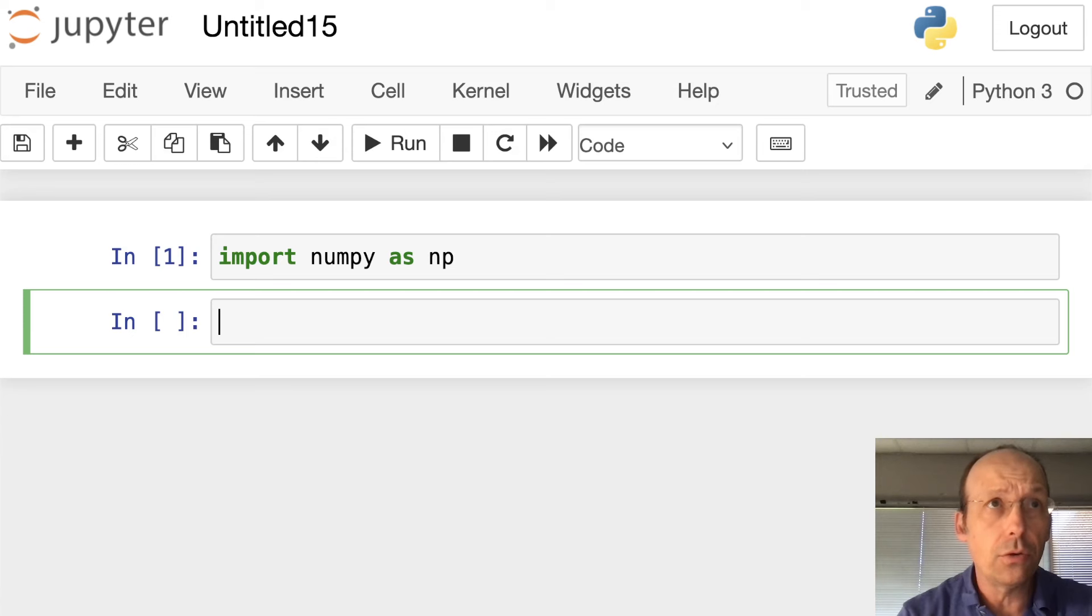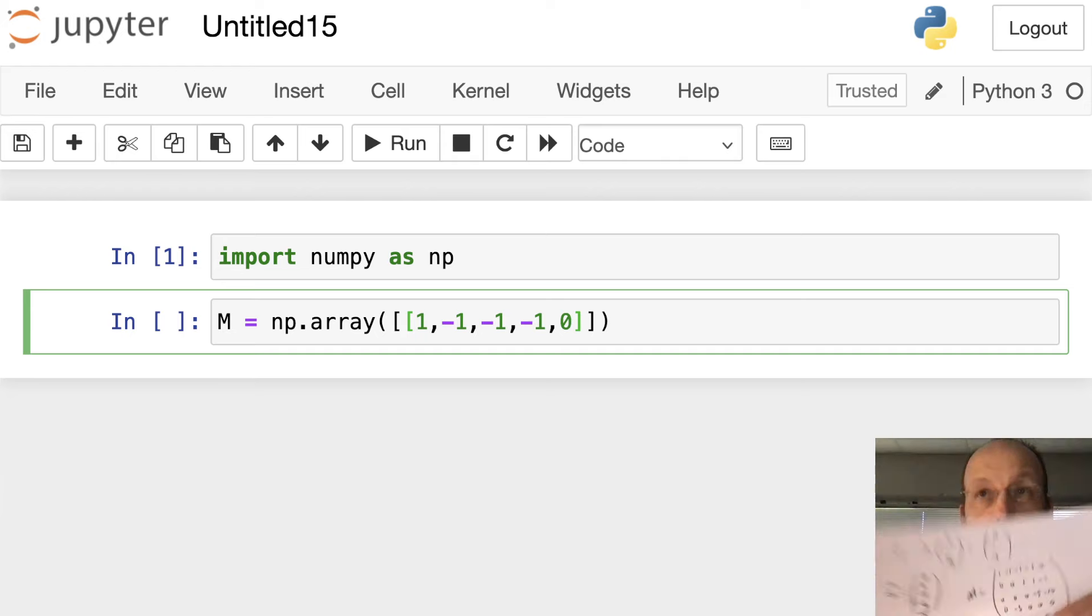Now the next thing we're going to do is to create our M matrix. So how do you create a matrix in Python? It's really just an array of arrays, array of lists. One of the most powerful things in Python, in NumPy Python, is the array. So let's make this as an array of arrays. So let me just type it out, and you can see what it looks like. M equals NP.array, and then I need to give it, I'm going to list my top row as a list, and then my second row is the next list. So it's a list of lists. So I'm going to type in 1, negative 1, negative 1, negative 1, zero.